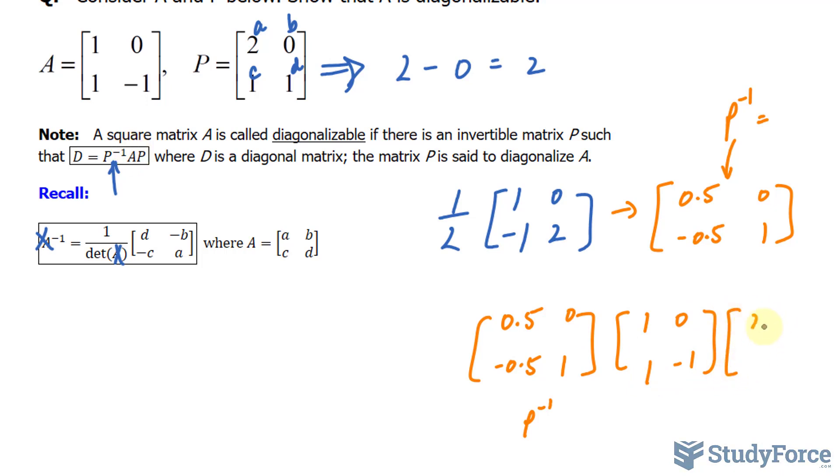again, P, 2, 0, 1, and 1. This is A, and that is P.